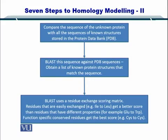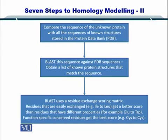Residues which are easily exchanged during the process of evolution have a low score, while residues that have different properties and are difficult to be substituted obtain a smaller score. Function-specific and conserved residues obviously obtain the highest score. So, the highest score belongs to functionally conserved residues, followed by residues that are easily exchanged, and the lowest score goes to amino acids which have totally different properties. The BLAST algorithm gives you an overall score for the protein sequence comparison by looking at these amino acids.